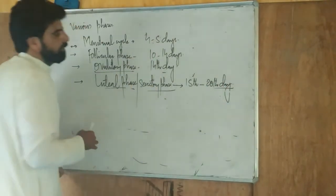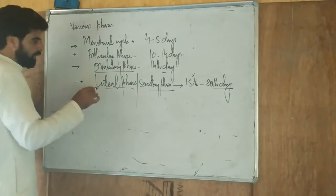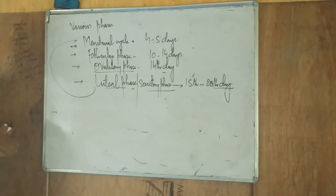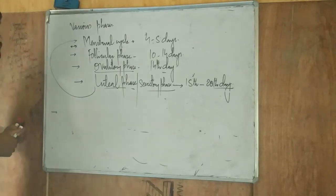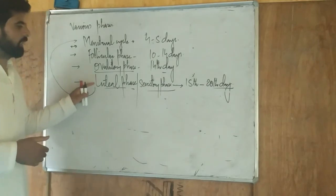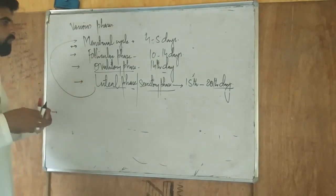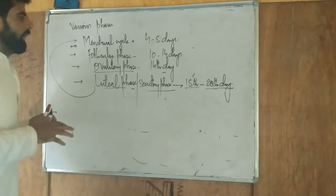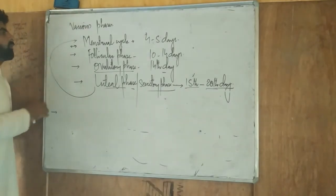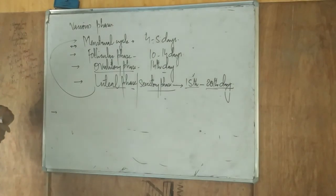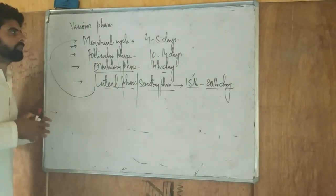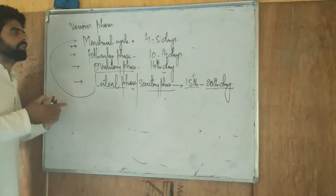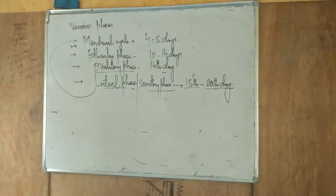If fertilization does not take place, then after the luteal phase there will be the menstrual phase, and the menstrual cycle begins again, lasting four to five days. If pregnancy takes place, there is no menstrual cycle. This is a brief idea about the various phases of the menstrual cycle. We will discuss them in detail tomorrow and see the various changes which take place in the female reproductive system.